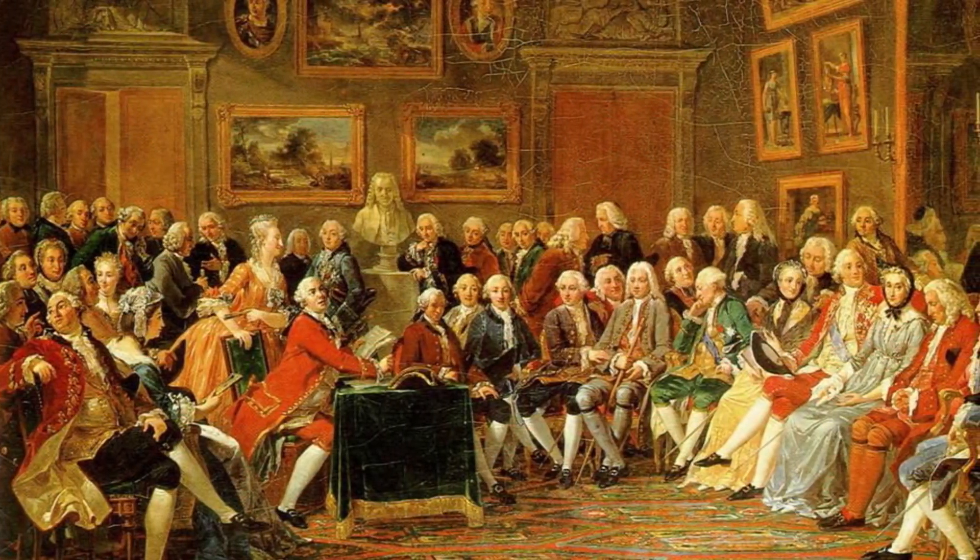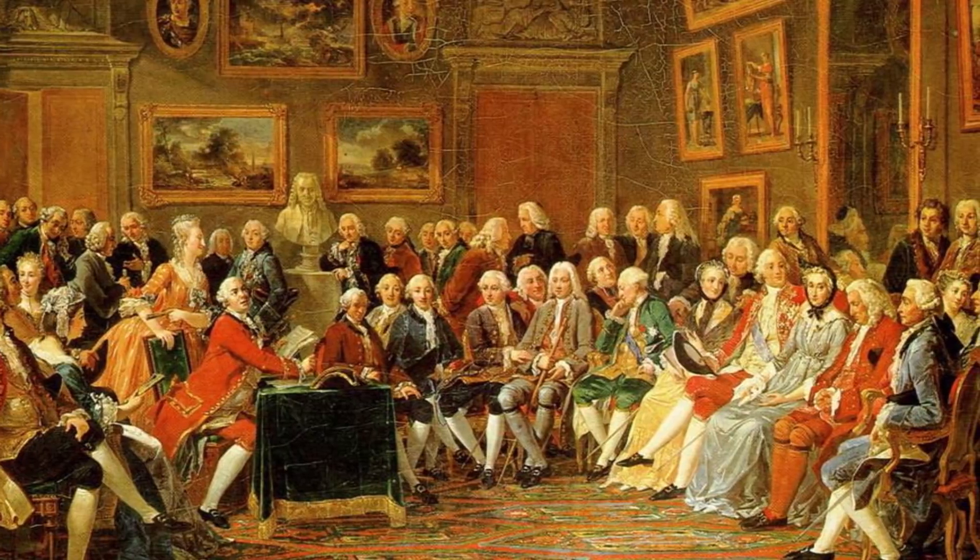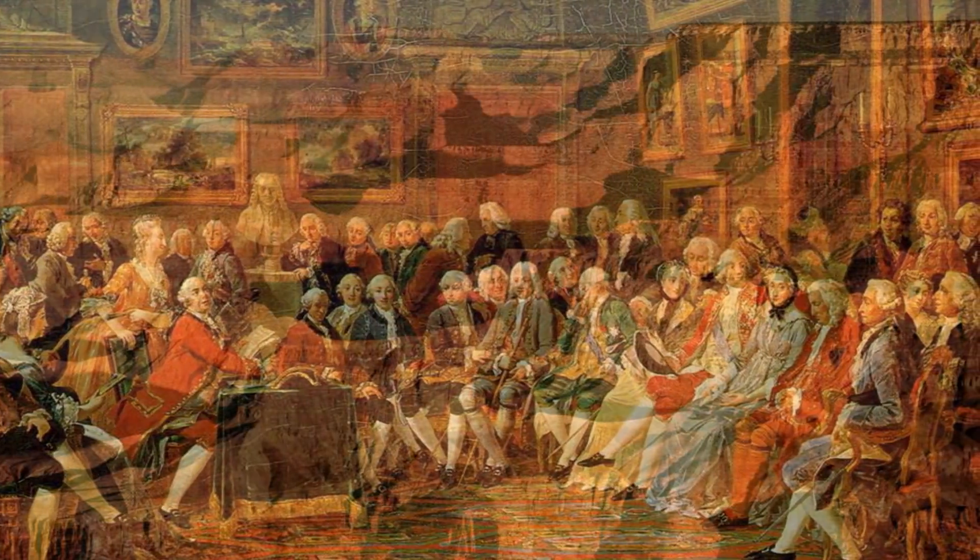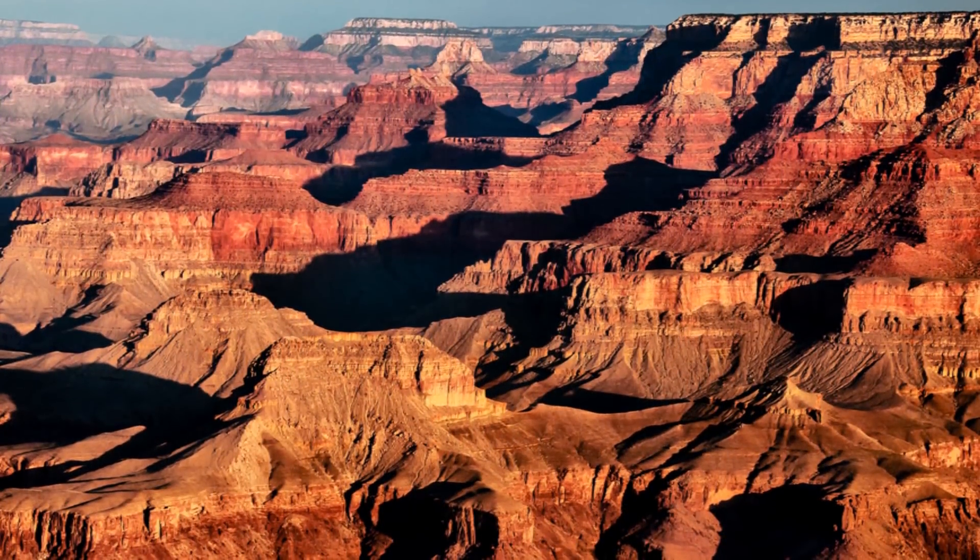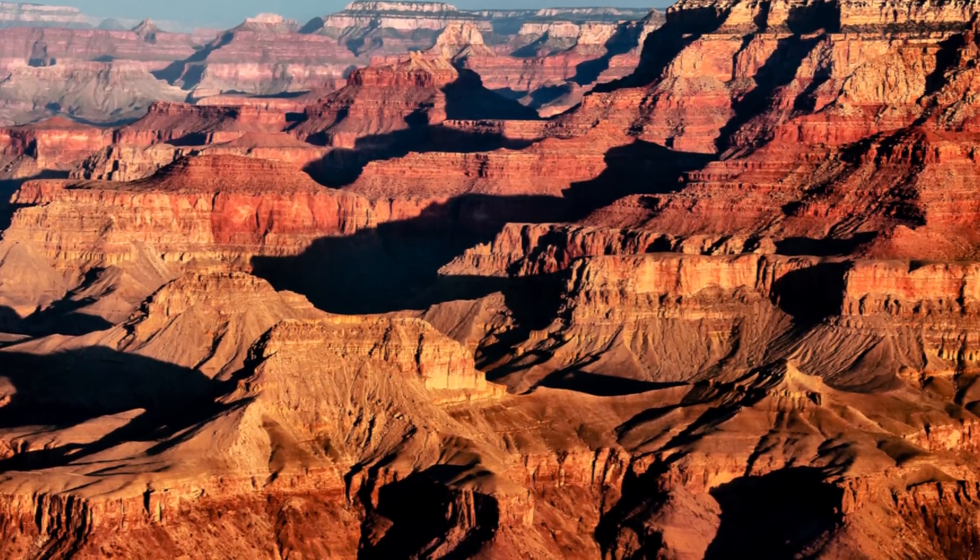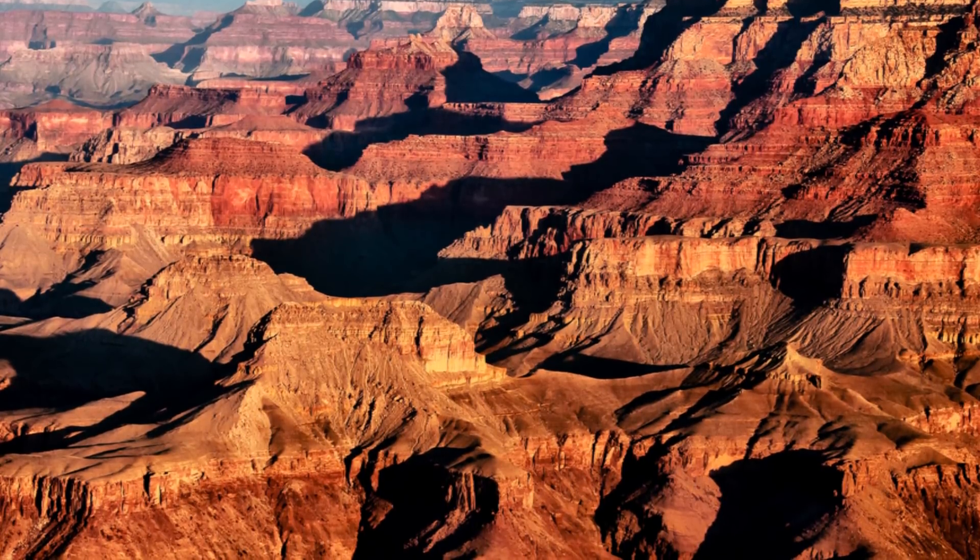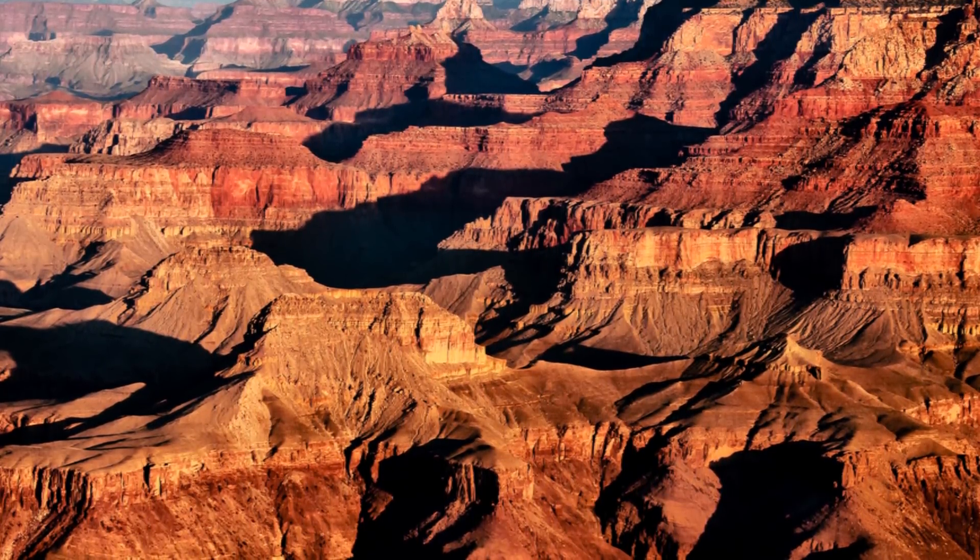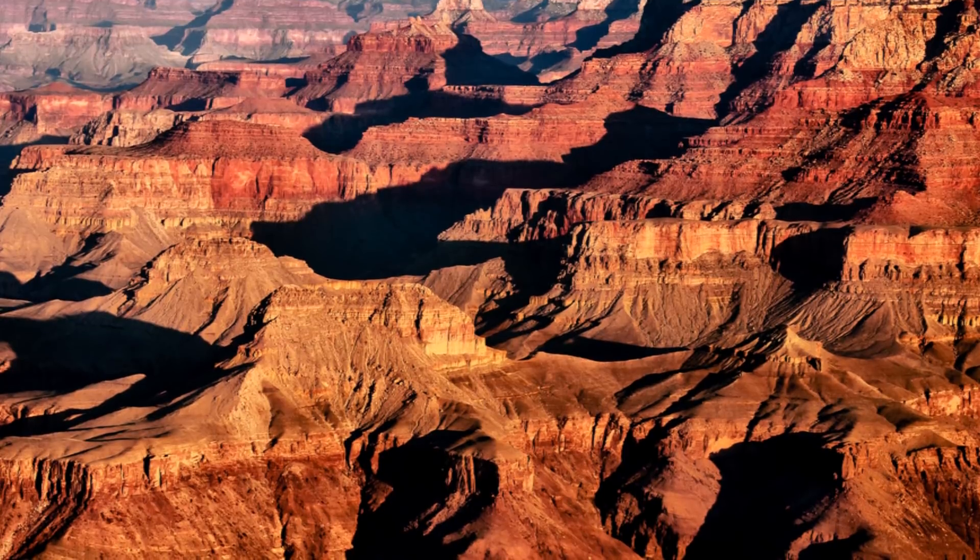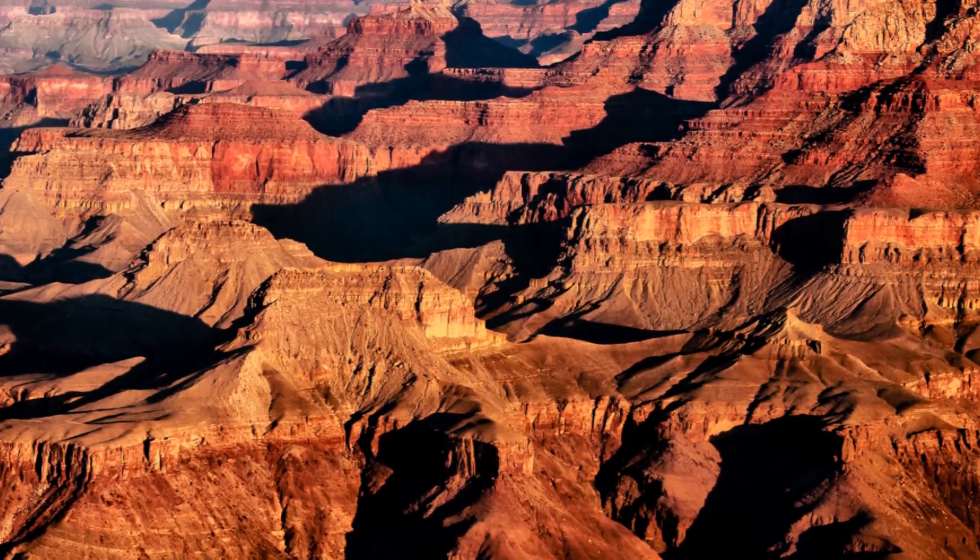The next significant attempt at dating the universe began at the start of the enlightenment. In fact, it began with advancements in geology. As scientists analyzed the relationship between fossils, strata, and age, they therefore estimated the Earth to be about 96 million years old, and with each discovery, that number was increased.